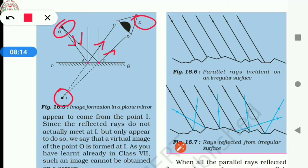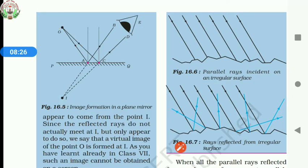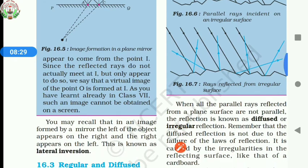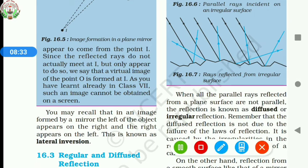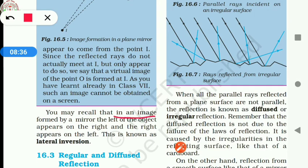Now, do you know what is lateral inversion? In an image formed by a mirror, the left of the object appears on the right and the right appears on the left. This is known as lateral inversion.